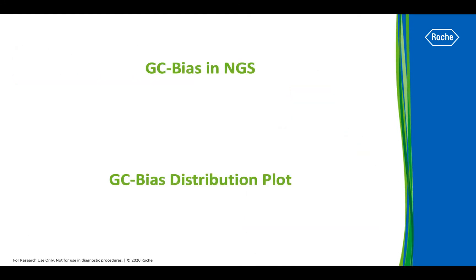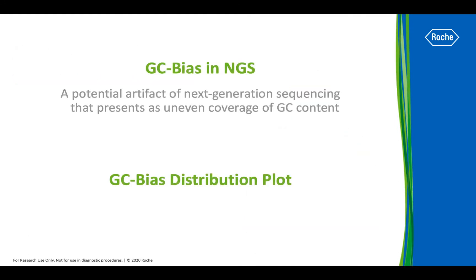GC bias is a potential artifact of next-generation sequencing that presents as uneven coverage of GC content. GC bias is more noticeable when the GC content coverage of the sample is variable. It's important to understand how to minimize GC bias to avoid the need for additional sequencing.